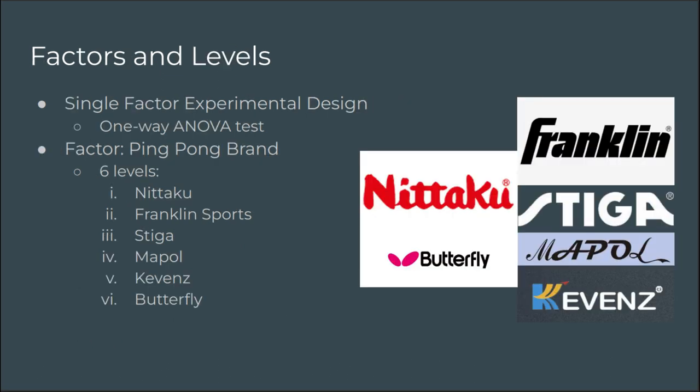As far as factors and levels are concerned, this experiment was a single factor design, and we used a one-way ANOVA test to test all the different levels. Those levels, all six of them, were simply the brands of the ping pong balls. In order from one to six, we have Nittaku, Franklin Sports, Stiga, Mapol, Kevenz, and Butterfly.